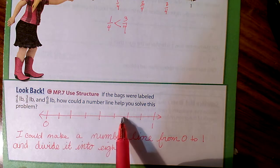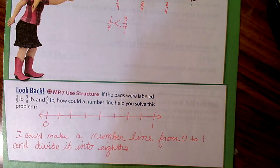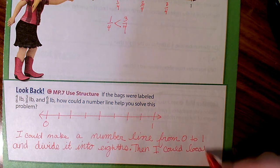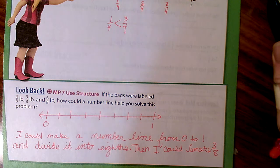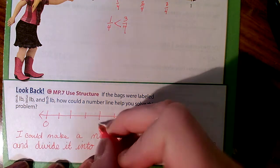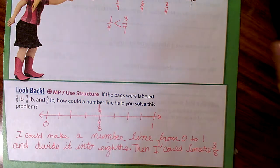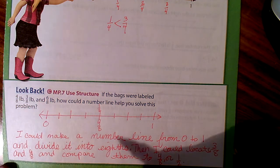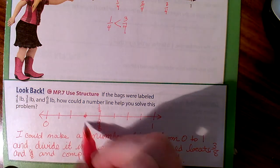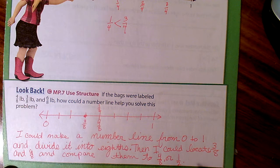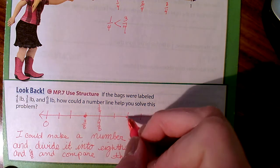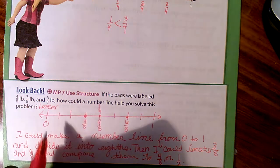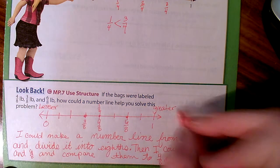Counting out eight equal parts: one, two, three, four, five, six, seven, eight. Then I can locate three-eighths, six-eighths, and compare them to four-eighths, which is also one-half. Three-eighths is at the third mark. Remembering that values to the left are lesser and the further to the right you go, the greater.